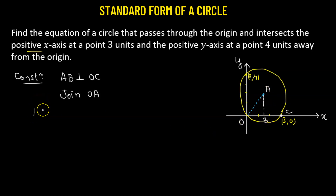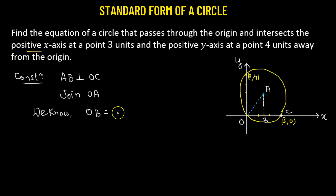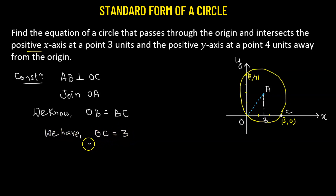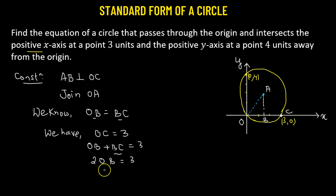We know for a fact that the perpendicular drawn from the center to the chord AC — AC is going to be the chord of the circle. Whenever we drop a perpendicular from the center to any chord on the circle, it bisects the chord, meaning OB equals BC. We have OC given as 3 units. OC is OB plus BC, which equals 3 units. Since OB equals BC, we get 2·OB = 3, so OB equals 3/2 units.